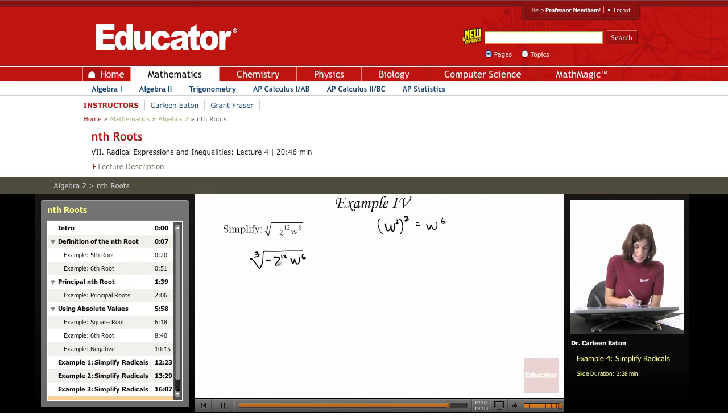Now looking at z to the 12th, I need z to the something when raised to the 3rd power. It's going to give me z to the 12th. Well, 4 times 3 is 12. This is 4 times 3. z to the 4 times 3 equals z to the 12th.